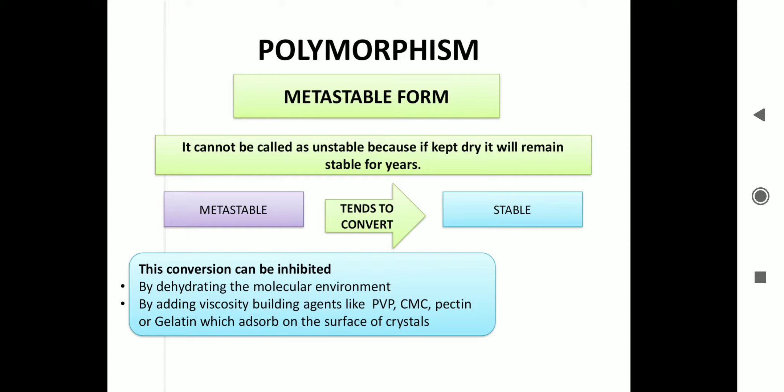But the metastable form tends to convert into the stable form. This conversion can be inhibited. The first technique is by dehydrating the molecular environment, removing the water, or by adding viscosity building agents like PVP, CMC, pectin or gelatin, which adsorb on the surface of the crystals. Through these two techniques, we can prevent the metastable form from converting into the stable form.